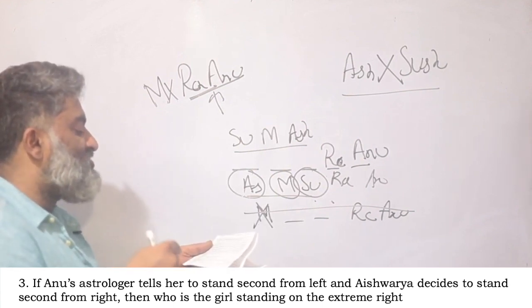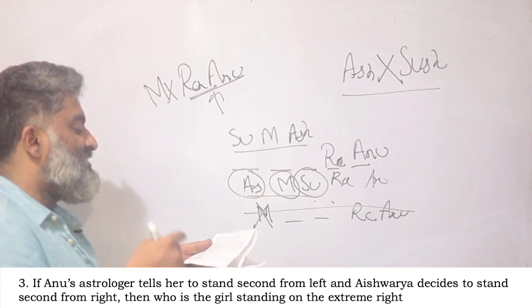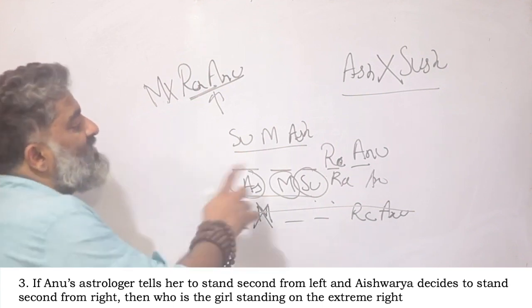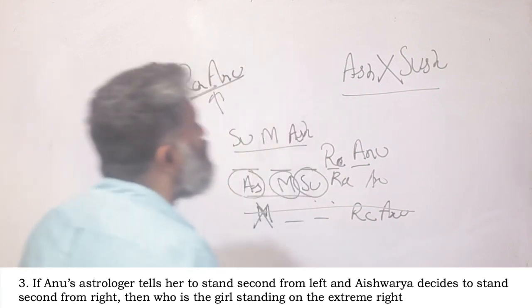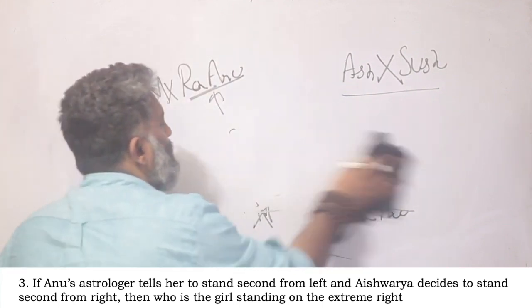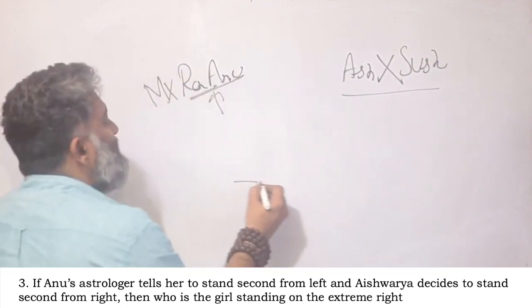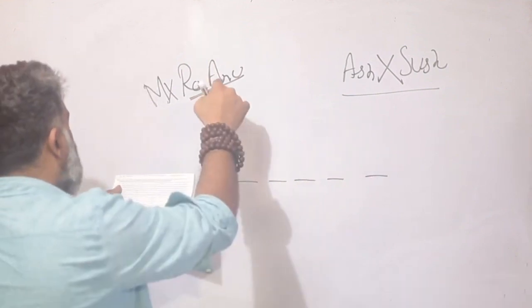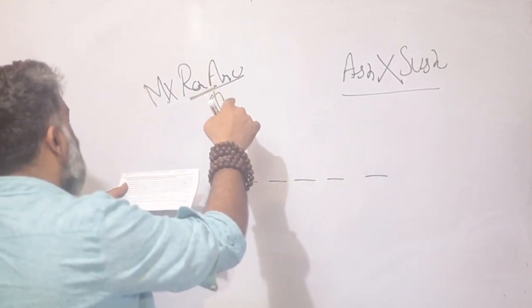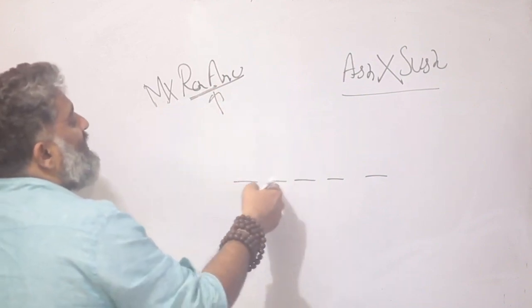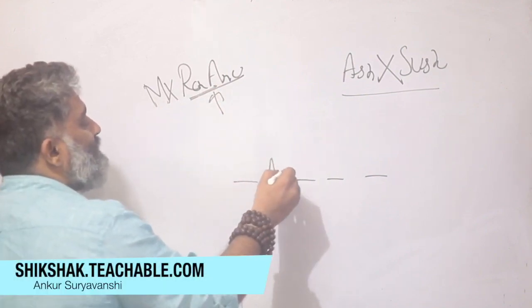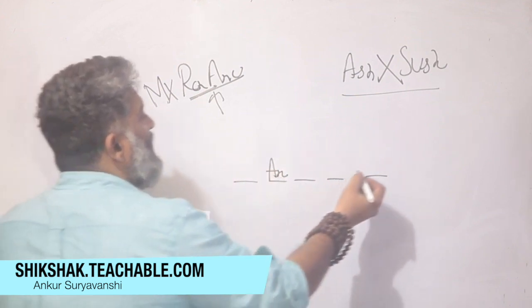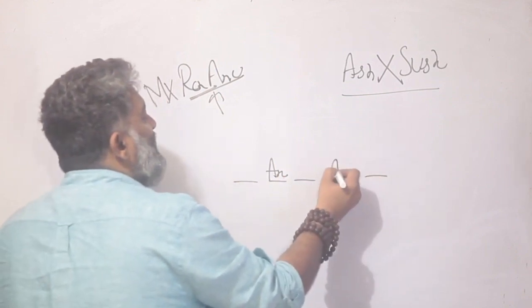If Anu's astrologer tells her to stand second from left and Aishwarya decides to stand second from right, that means this story is not working for me anymore. New rules have been given. So let me plot the five places again and let me follow the story again. If Anu's astrologer tells her to stand second from left, first from left and this is second from left, so Anu is here. And furthermore, Aishwarya decides to stand second from right.